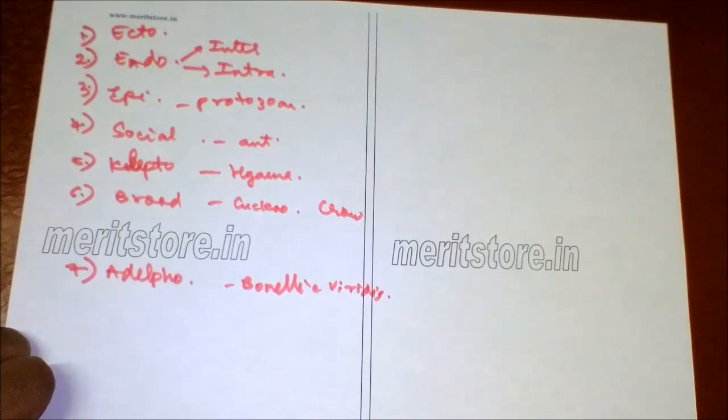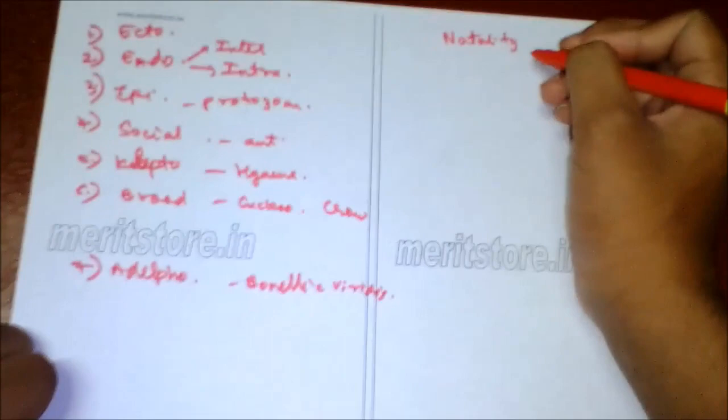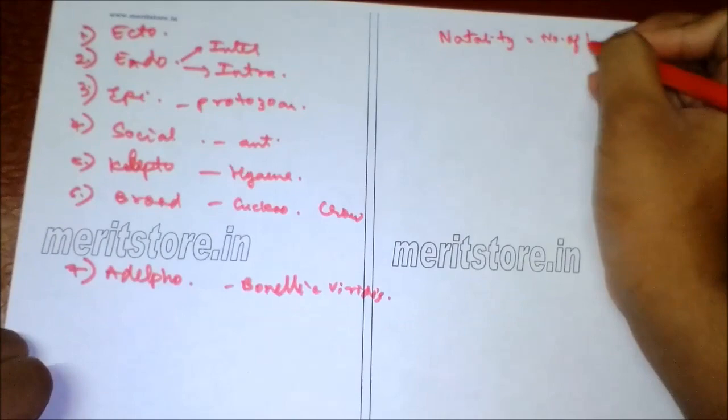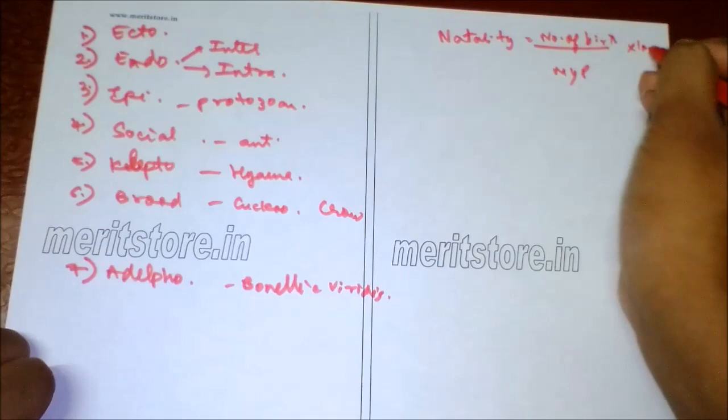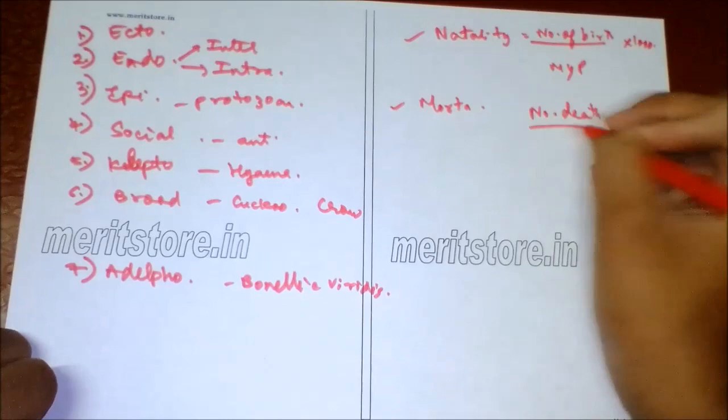There are different population factors responsible for population dynamics, which may be natality, which is number of births per year divided by mid-year population times one thousand. Next is mortality, which is number of deaths per year divided by mid-year population times one thousand.